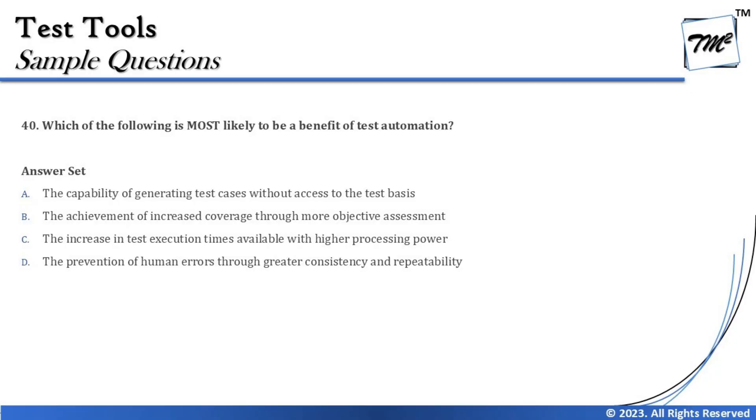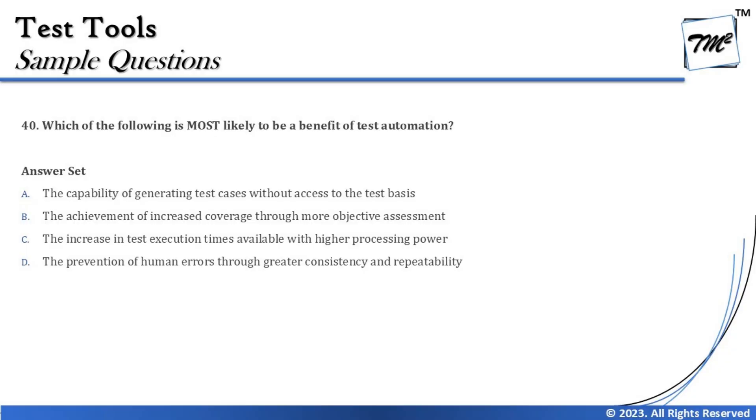The next and final question of Set C is question 40: which of the following is most likely to be a benefit of test automation? We have already covered benefits and risks of automation in our tutorials, so let's read the options and get to the right answer. Option A says: the capability of generating test cases without access to the test basis. This is not something we should consider valid.